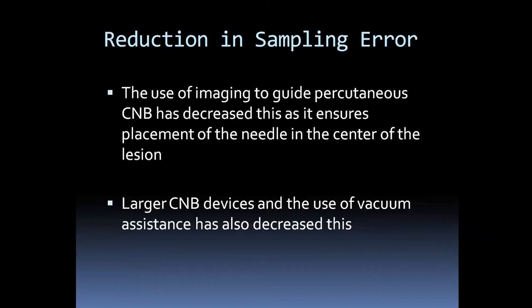To reduce sampling error, use imaging to confirm the needle is centered in the lesion and that different parts of the lesion are sampled. The larger the bore of the core needle device, or when using vacuum-assisted devices, the false negative rate decreases. You can reduce sampling error with a larger bore needle and vacuum assistance, though larger bore needles carry increased risk of bleeding.